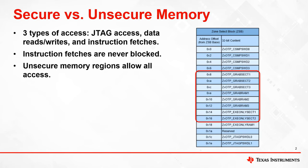When a memory region is unsecure, all access is allowed, such as JTAG access and data reads or writes from the CPU.